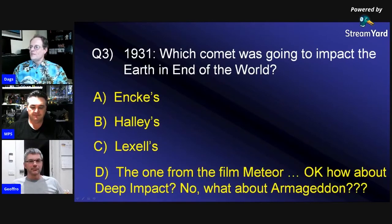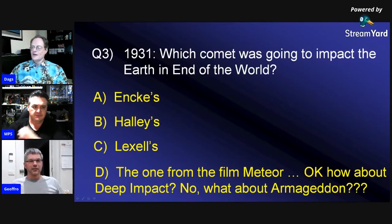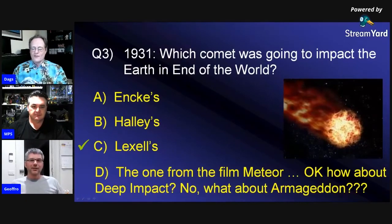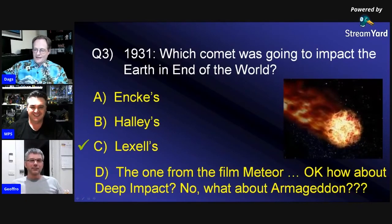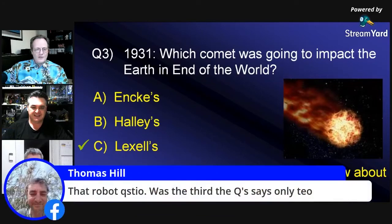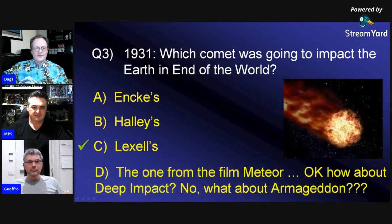1931 — which comet was going to impact the Earth in End of the World? One of you said C and the other said A. Sorry, it was Lexell's. Good old Lexell's, so there you go.